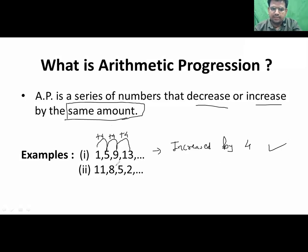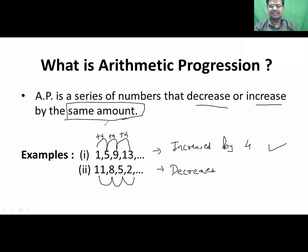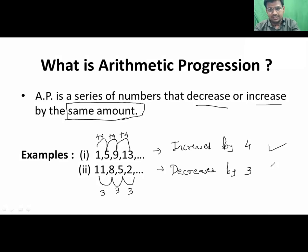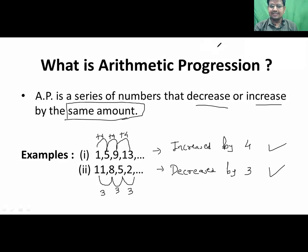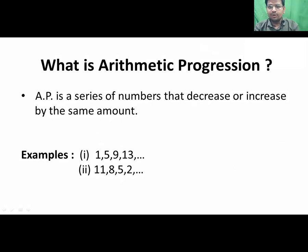Let us see one more example: 11, 8, 5, 2. This series is in decreasing order. But the main important point is that it must decrease by the same amount. It is decreased by 3, again decreased by 3, and again decreased by 3. So the given series is also part of the AP. AP means a series that increases or decreases in the same amount — that is the main point.